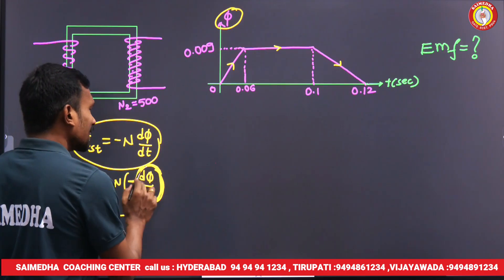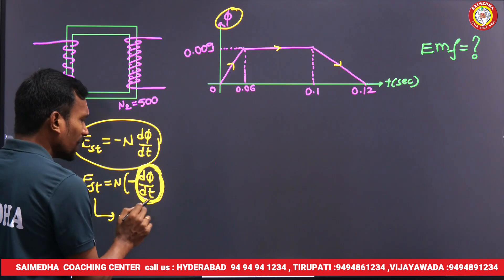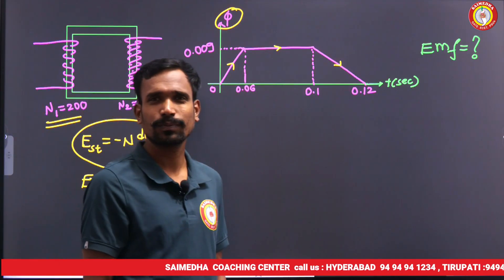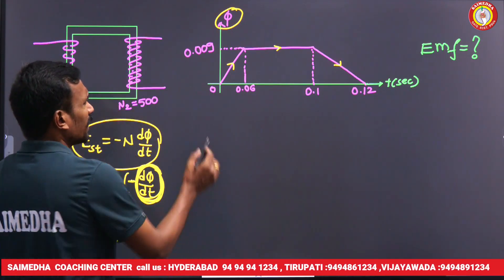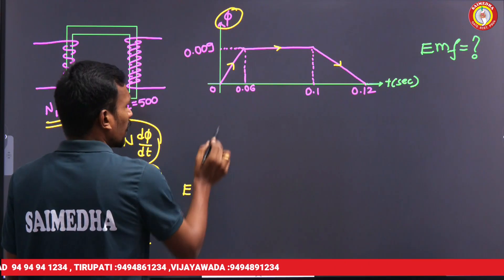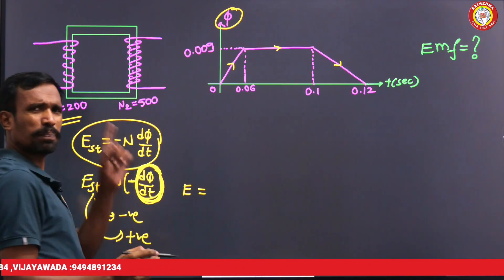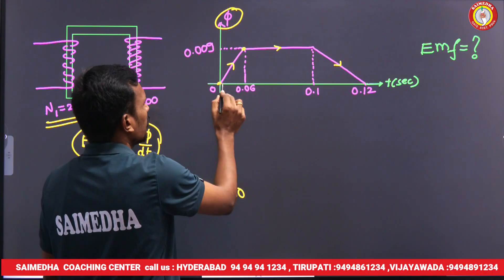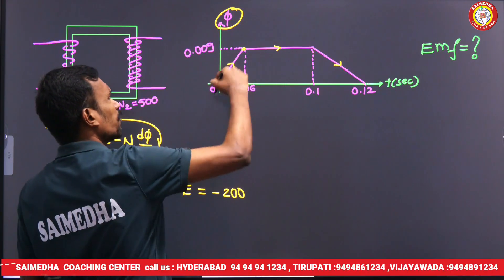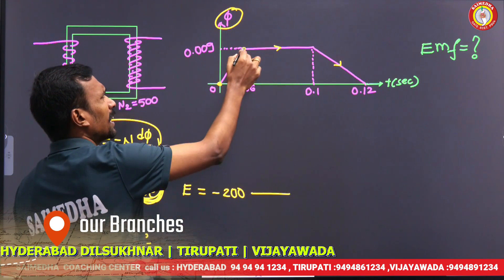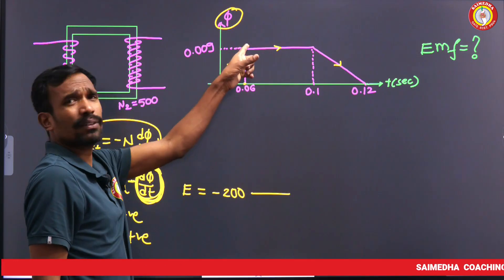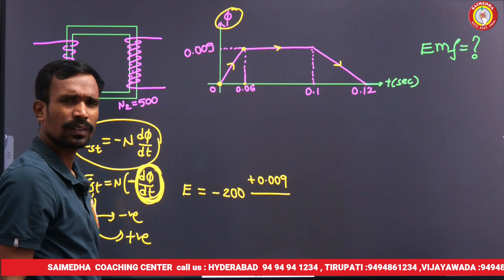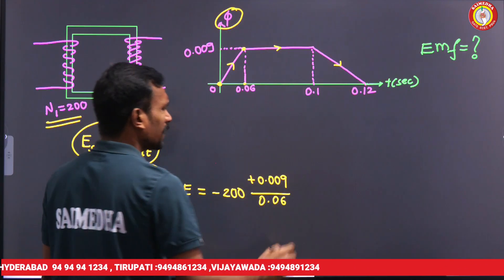If the rate of change of flux is negative, then negative and negative gives positive EMF. Now, what is the change in flux? The change in flux is 0.009. What will be the change in time? 0.06 will be the change in time.